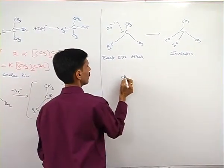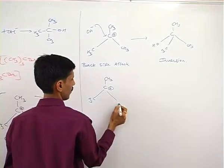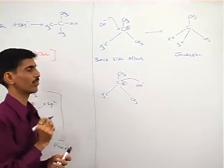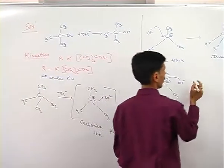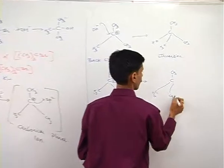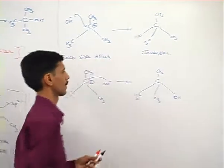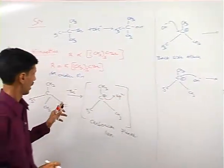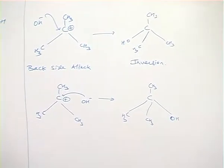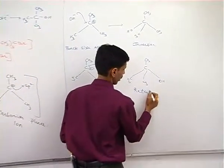Next possibility is with the carbocation, here the OH minus is going to attack from the front side. So as a result of this what you get is the final product in this fashion. Have a look now between this and this. These two you compare. It comes out to be exactly same. Where Br was, there exactly OH is. It's not a mirror image. And as a result of this we say that this is retention of configuration.